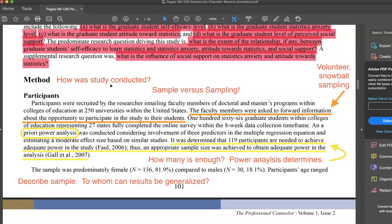For participants, they describe the sample, the who was in the study, and the sampling, how the sample or how the participants were recruited. In this case, the faculty members at 250 universities were asked to forward the information to their students that qualified. This is called a volunteer snowball sampling.